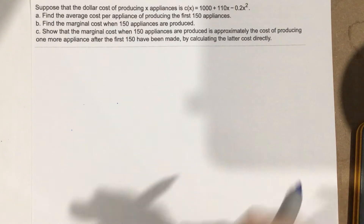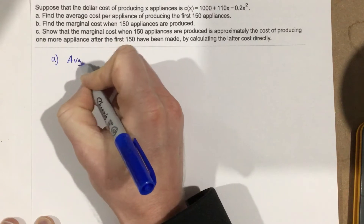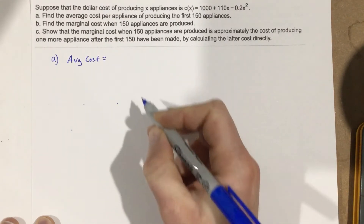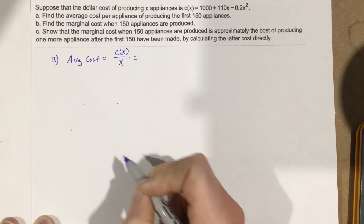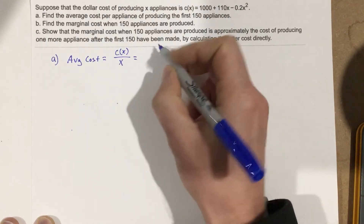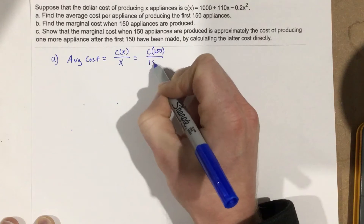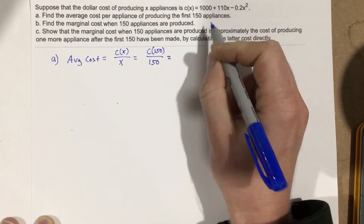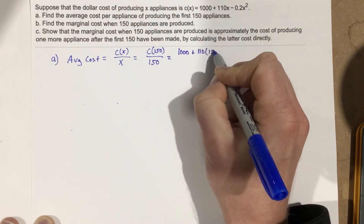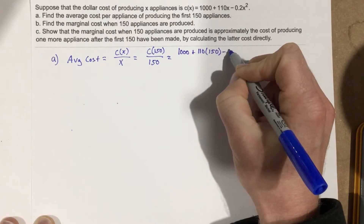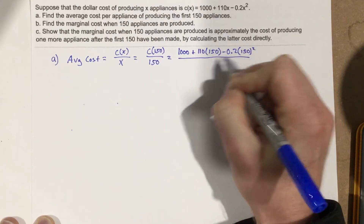If they give us a cost equation, we know we can find the average cost. For part A, we find the average cost by simply taking the cost divided by the number of appliances. So that's C(150) divided by 150. Plugging in: 1,000 plus 110 times 150, minus 0.2 times 150 squared, all over 150.